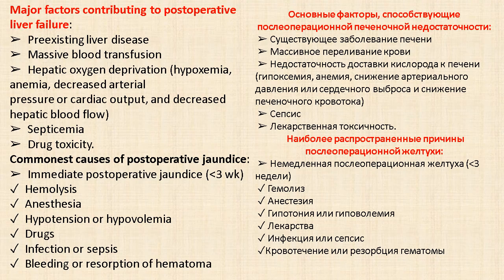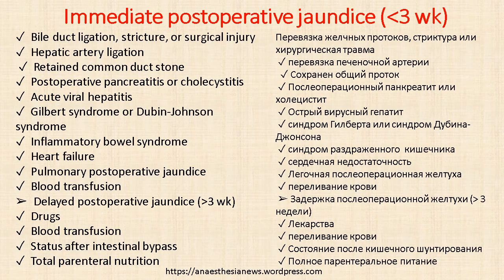Major factors contributing to postoperative liver failure include: pre-existing liver disease, massive blood transfusion, hepatic oxygen deprivation, sepsis, and drug toxicity. Causes of immediate postoperative jaundice include: hemolysis, anesthesia, hypotension or hypovolemia, drugs, infection or sepsis, and bleeding or resorption of hematoma. Causes also include bile duct ligation, ischemic injury or surgical injury, hepatic artery ligation, retained common duct stone, postoperative pancreatitis, acute viral hepatitis, Gilbert syndrome or Dubin-Johnson syndrome, inflammatory bowel disease, and heart failure. Late postoperative jaundice may be due to blood transfusion, drugs, status post intestinal bypass, or total parenteral nutrition.